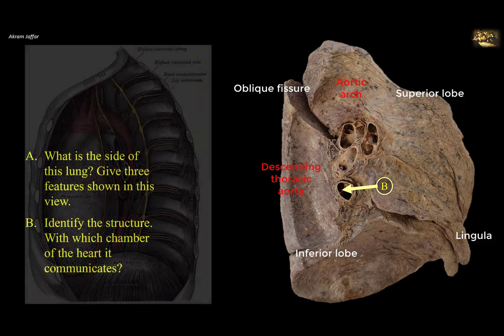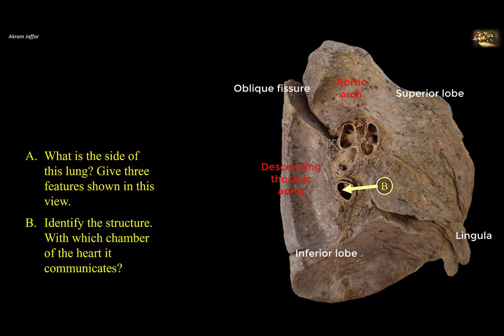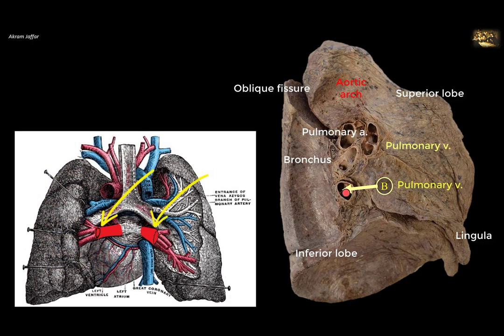Structure B is one of the components of the root of the lung. It passes through the hilum. We can see the structures of the hilum: the artery above, then the bronchus with thick wall and cartilages, and then the pulmonary veins anteriorly and inferiorly. The inferior structure is always a vein — the pulmonary vein. It communicates with the left atrium because it carries oxygenated blood from the lung to the heart, but it is called a vein because it carries blood toward the heart.